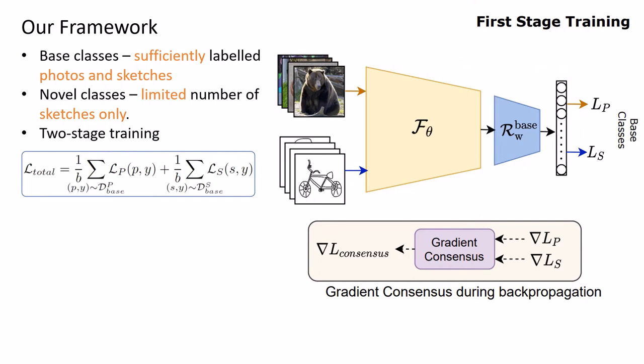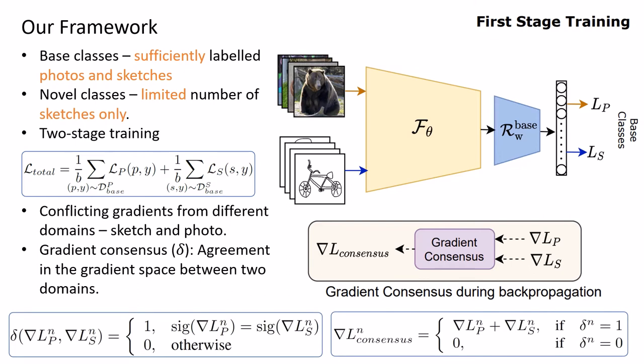However, the two domain being vastly different, gradients from both loss objectives are highly conflicting. Hence naively adding them would be suboptimal for training. We thus introduce a gradient consensus function that aims to update the model in the direction where there is an agreement in the gradient space between two domains, thus encouraging to learn a domain invariant representation.